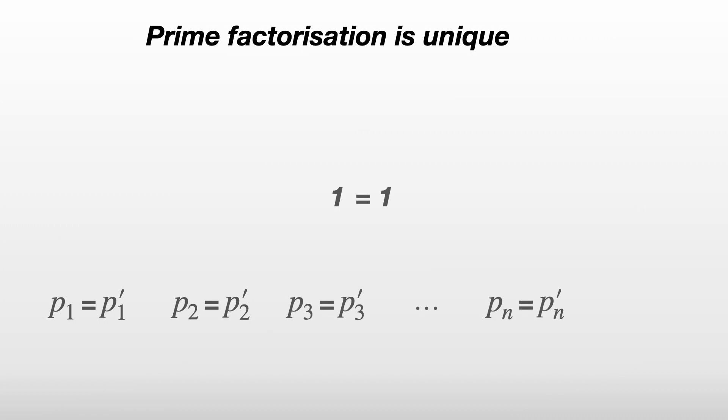And carrying on like this, we end up with all the p1 to pn equal to all the p1' to pn'. And this contradicts our original assumption that the two prime factorizations are different. That is, we've proved there's one unique prime factorization of our original x.